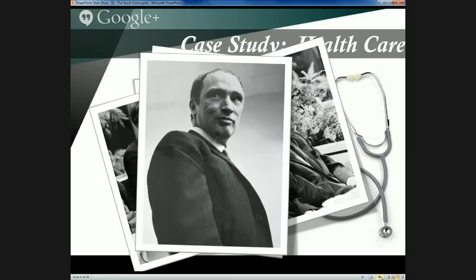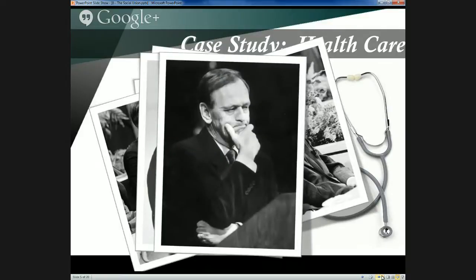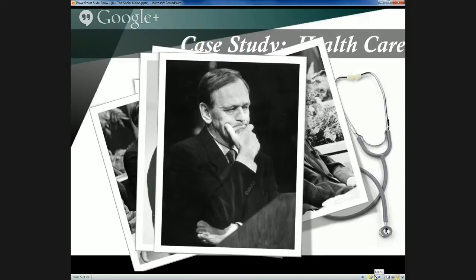The next major innovation occurred in 1996 when the Chrétien government established the CHST — the Canada Health and Social Transfer — combining the Canada Assistance Plan with EPF, and dramatically reducing the amount of money that would flow out to the provinces. Later, the Chrétien government would establish a national health accord, followed by massive investments by the Martin government, which became the 10-year health accord.